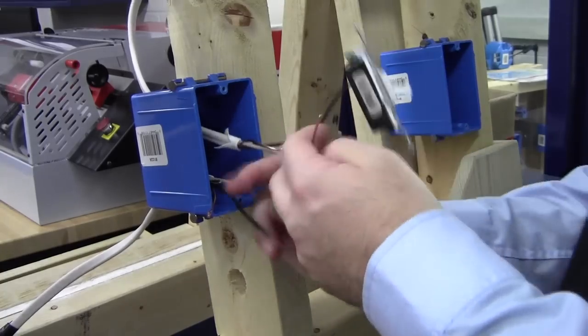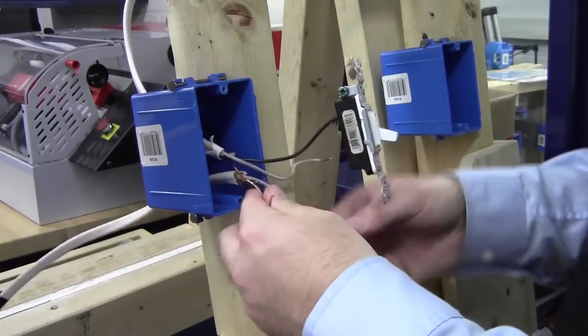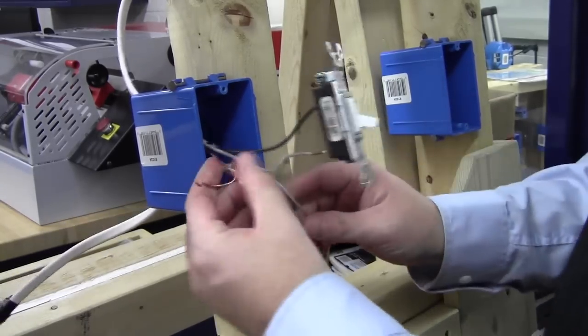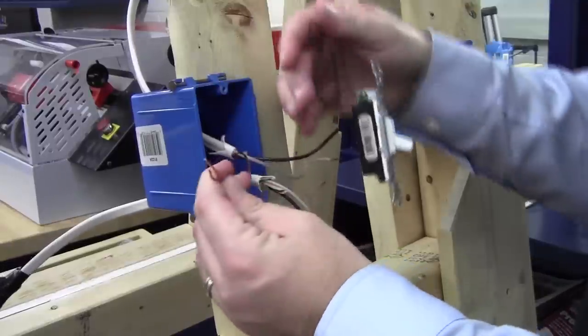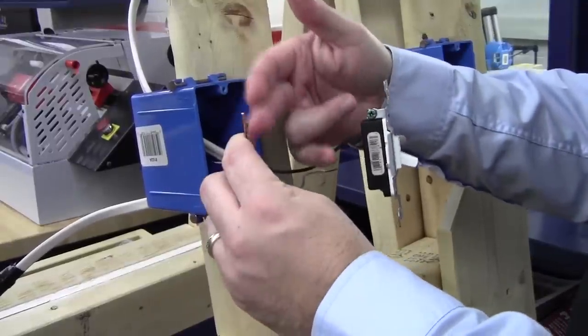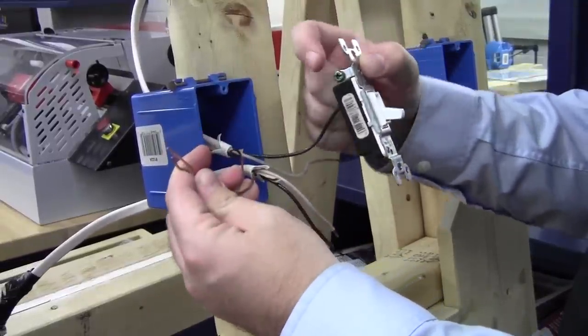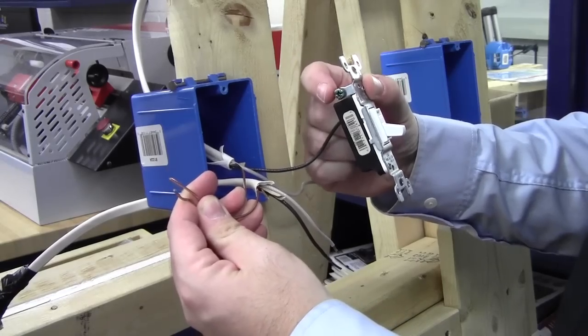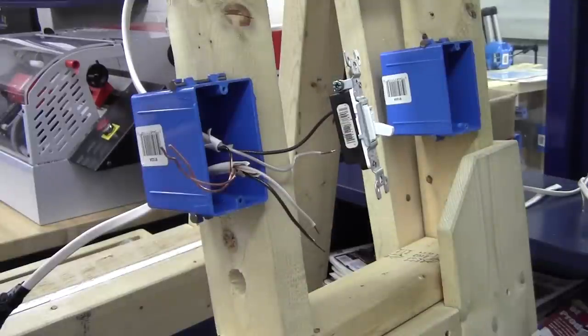So today, or in this video, we're going to focus on how to do what we call a pigtail. Now what a pigtail is, is a short strand of wire that we are going to wire nut to these grounds and connect to what's called the ground screw. If you can look here, there's a little green screw on the switch itself.